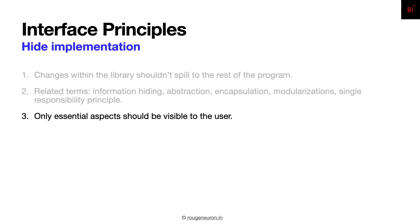If an API is exposed, eventually it will get used for unintended reasons as well. You can never predict how users will end up using it. So if you are exposing it, be very sure that it is by design — otherwise just hide it.